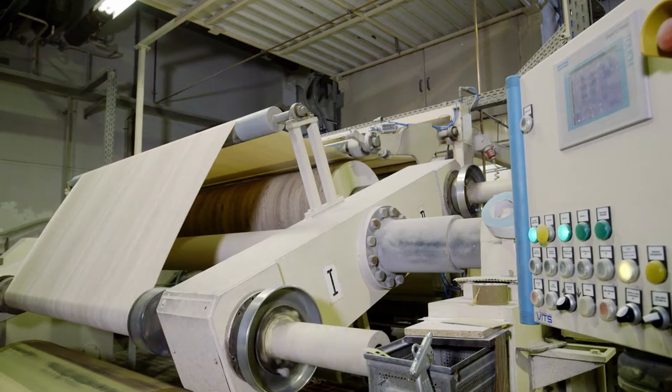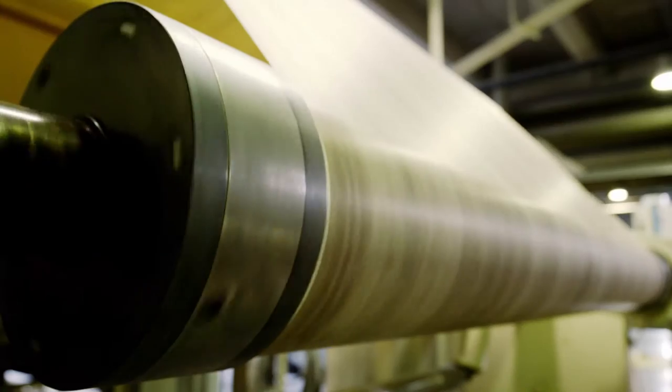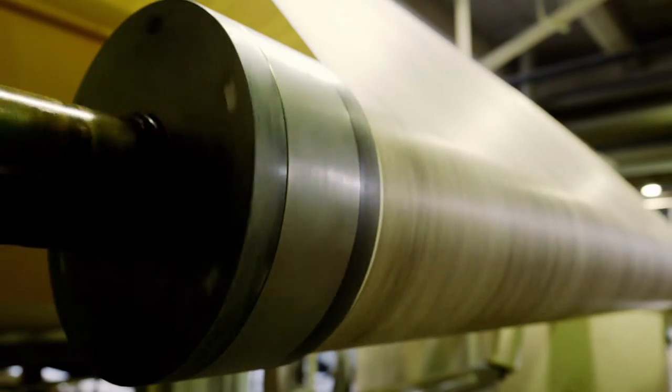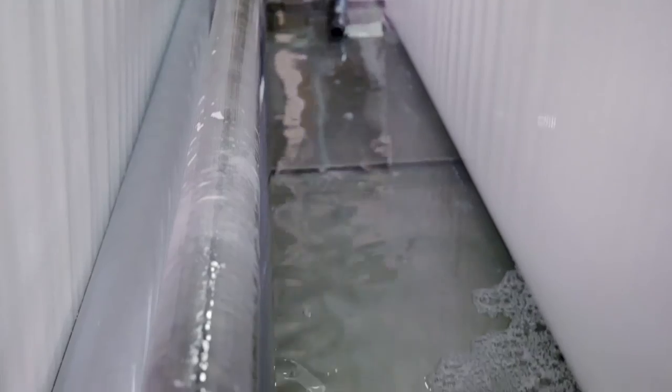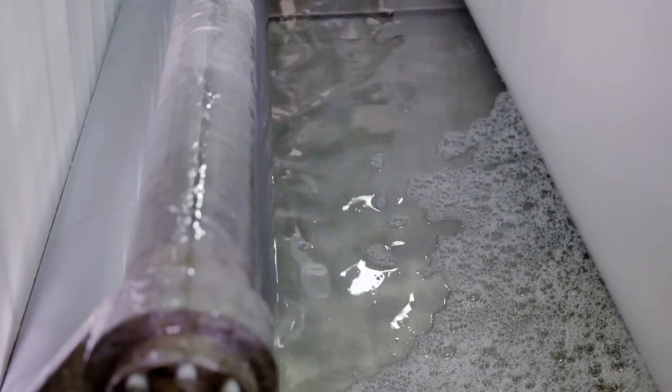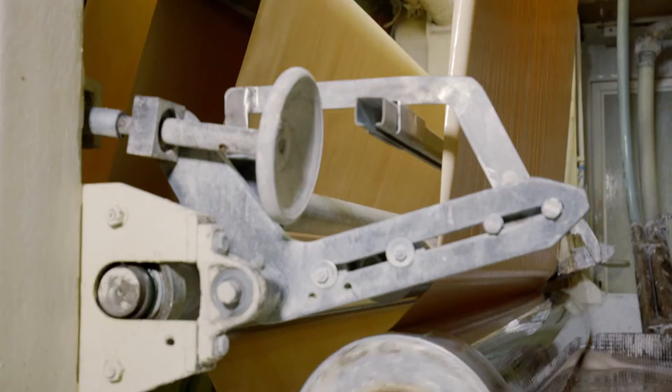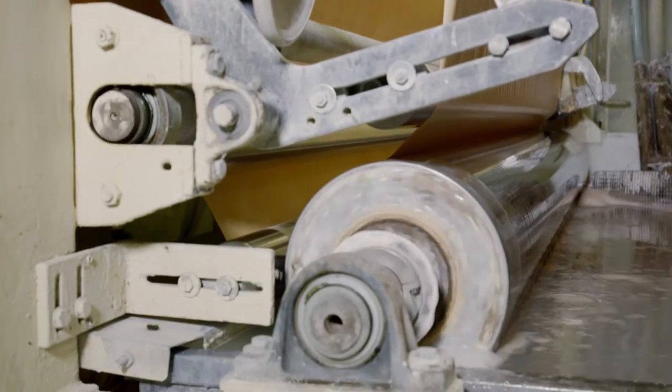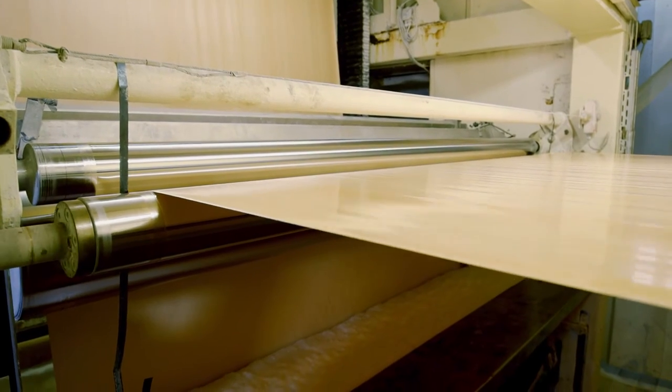As a next step, the decorative paper is impregnated. To this end, melamine resin or a mixture of melamine resin and urea is applied to the paper. An Analox roll system or coater allows for even surfacing and removes excess impregnating liquid.